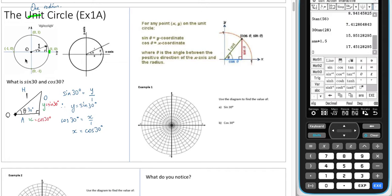Then we know that the distance from the origin to this point here is going to be cosine 30 degrees. We also know that the height, which in this case is y, is going to be sine 30 degrees.